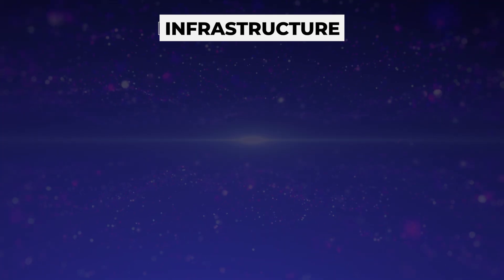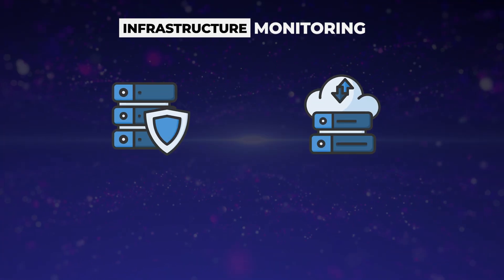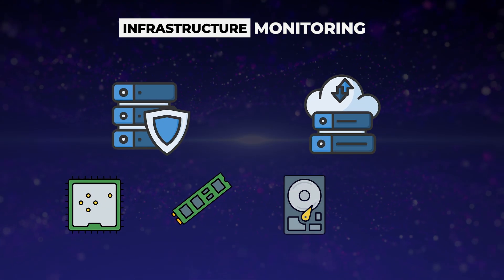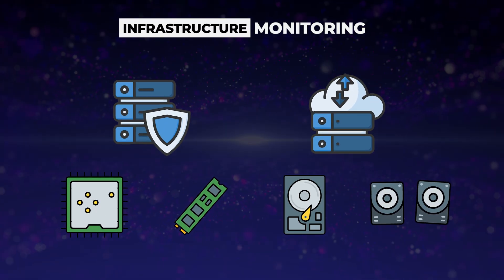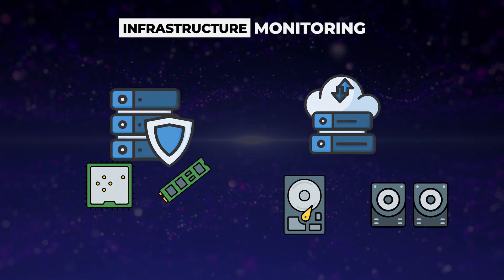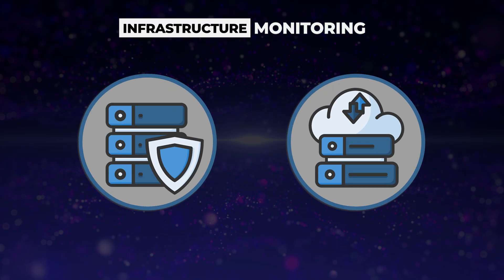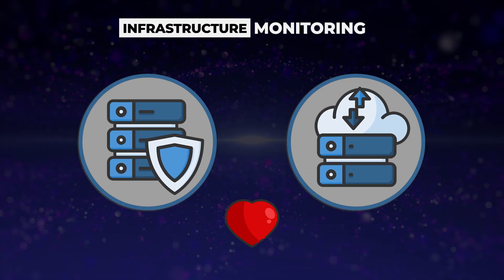It covers three main areas of your IT environment. Infrastructure monitoring covers your physical and virtual servers, including CPU usage, memory consumption, disk space, and system processes. Whether you're running on-premises servers or cloud instances, Nagios keeps track of their health and performance.